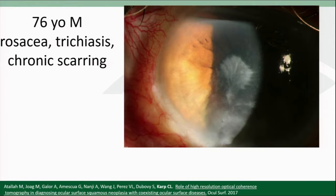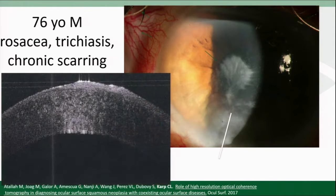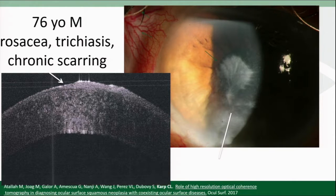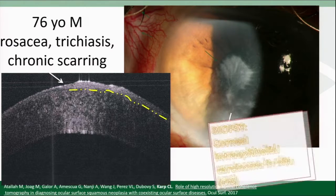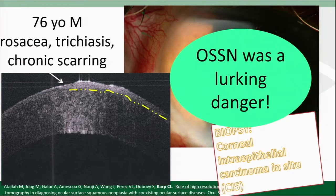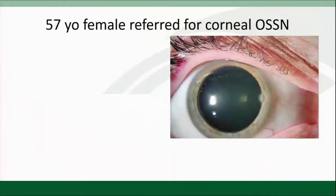Another gentleman with longstanding trichiasis, corneal scarring, and rosacea, followed for his scarring. But it looked a little fishy at 6 o'clock, kind of granular in nature. When I scanned right there, what we see is normal epithelium, an abrupt transition, and thickened hyperreflective epithelium on the cornea. This was biopsied and confirmed that ocular surface squamous neoplasia was a lurking danger on this patient too.